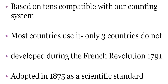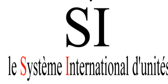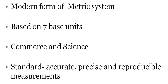The system was adopted in 1875 as a scientific standard — a standard for all scientists to use. Système International d'Unités is the name and it means international system of units. The SI system is the modern form of the metric system, but it's a little bit narrower. It's based on seven base units, and the point is that in commerce and in science, people would be able to communicate and make it easier to talk to each other across nations. It is a standard because it is set, and it helps because it is accurate, precise, and reproducible.